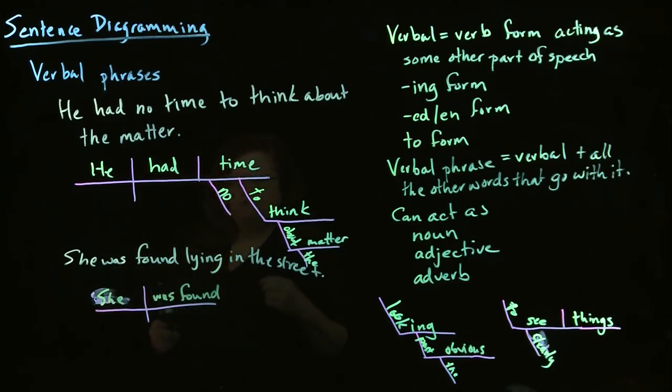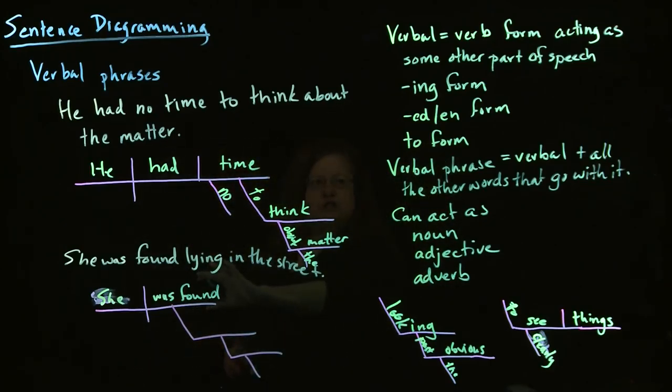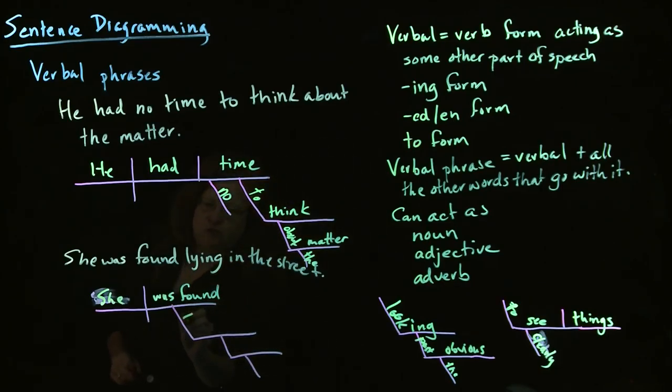And then we have, we could either say it was how or where, lying in the street. So lying is our verbal. It's an ing verb with no helping verbs. So it goes in this way, l-y-i-n-g, turns the corner. And then we have the prepositional phrase in the street.